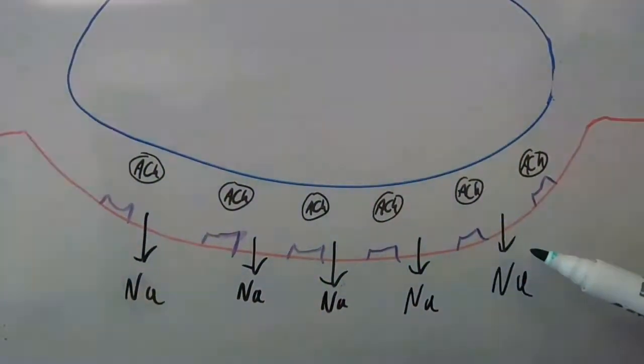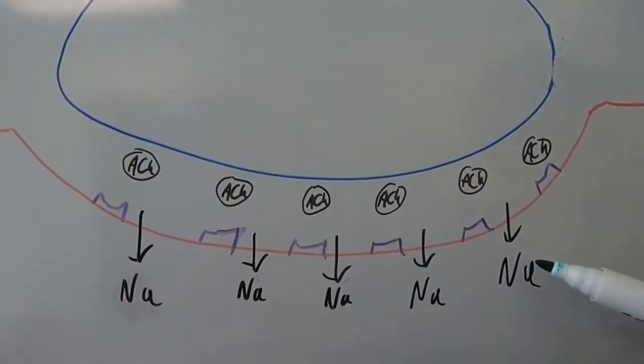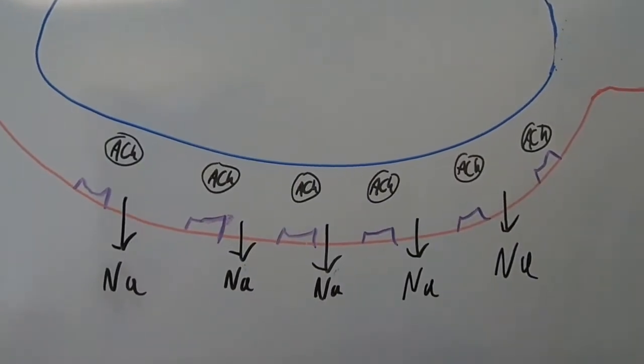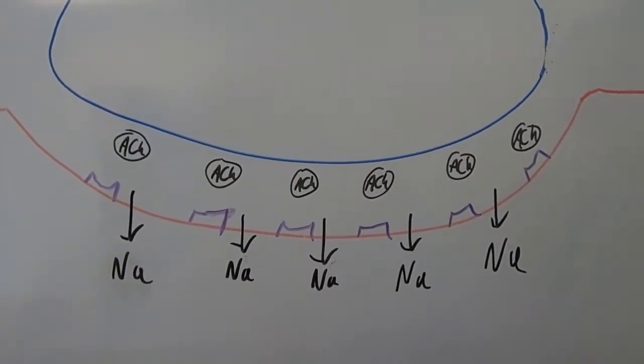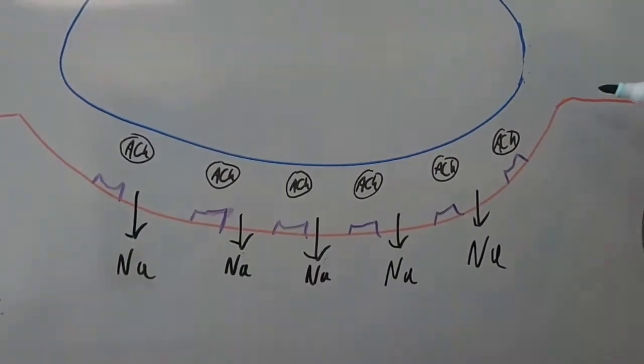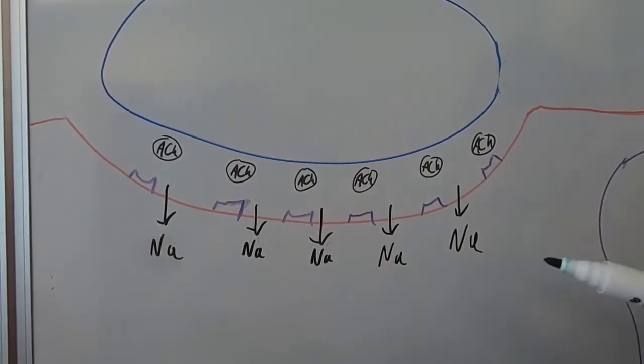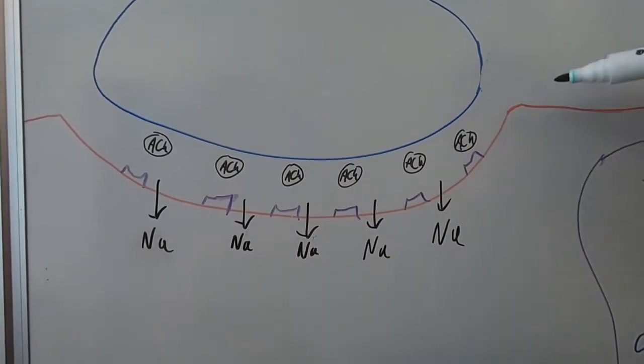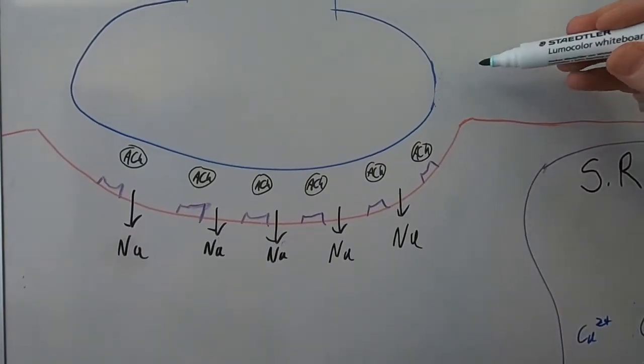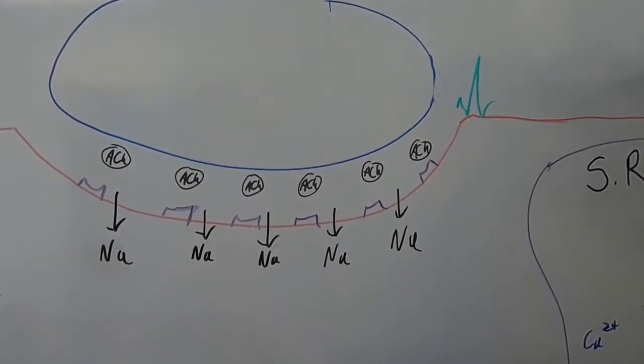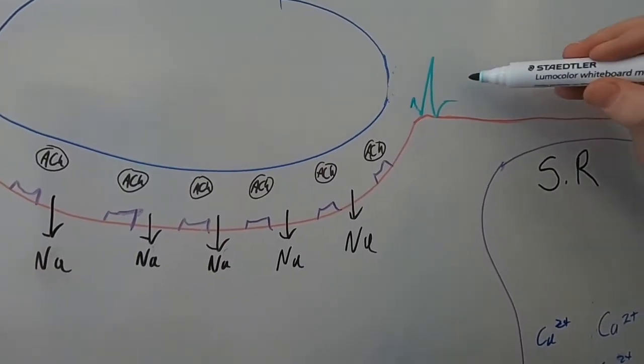Once they bind to those receptors, sodium will start to move into the skeletal muscle and start to depolarize the muscle, and we call this area of the muscle the motor end plate. Now once we have this depolarization, what this means is we start getting the propagation of action potentials going across the muscle.